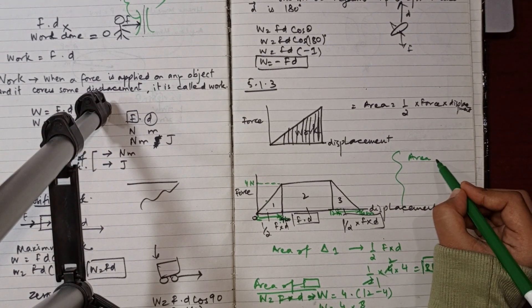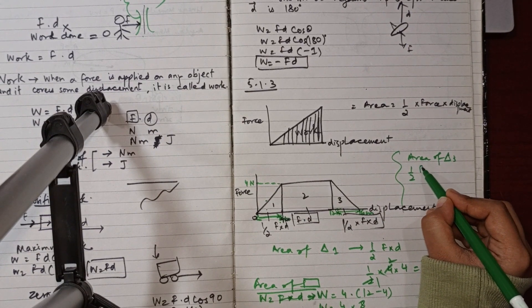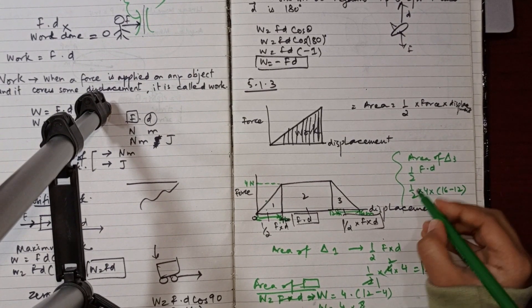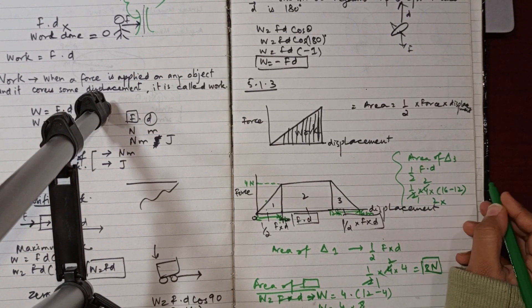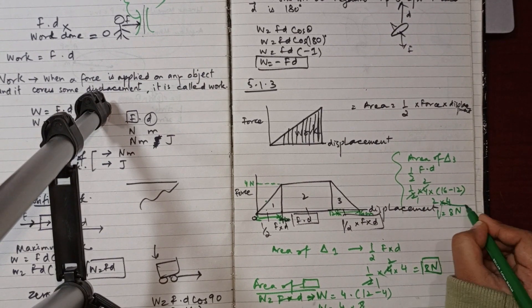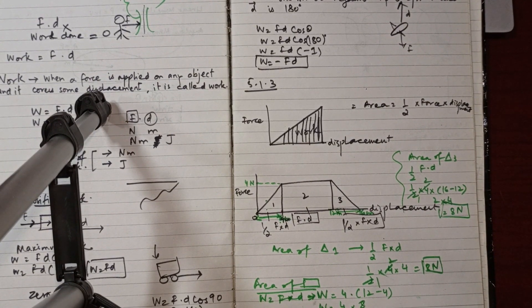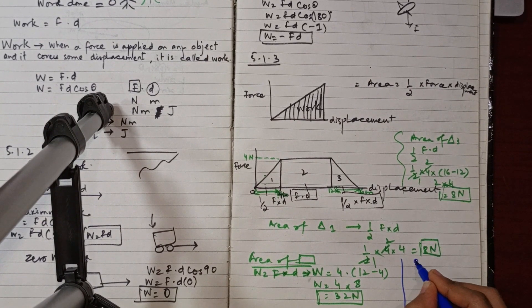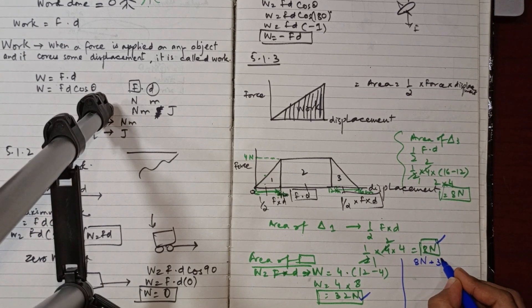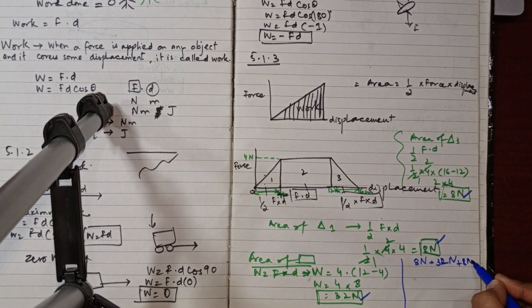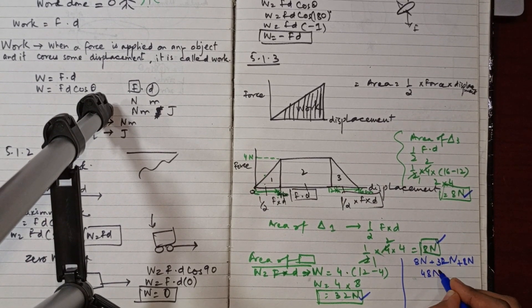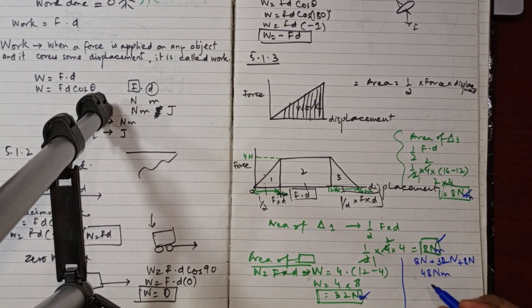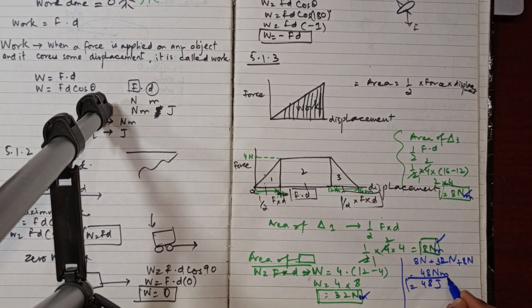Area of triangle 3: ½ × 4 N × (16 − 12) m = ½ × 4 × 4 = 8 N·m. Total work = 8 + 32 + 8 = 48 Newton-meters = 48 Joules. That is our final result.